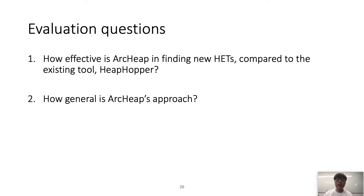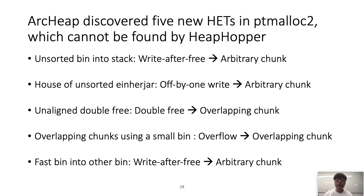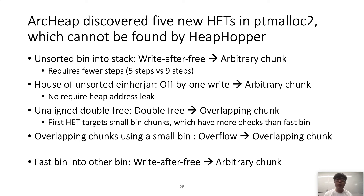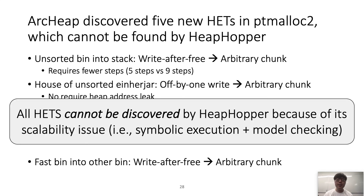Our evaluation addresses two questions: how effective is Rkip compared to the existing tool HeapHopper, and how general is Rkip's approach? Rkip discovers five new heap exploitation techniques in ptmalloc2 that cannot be discovered by HeapHopper. The first technique is called Unsorted Bin Attack, requiring fewer steps than the existing approach. Another technique, House of Unsorted INR, converts an off-by-one null-byte overflow into an arbitrary chunk without a heap address leak. Unaligned double free is the first technique that uses double free in the small bin, which has more checks than the fast bin. These techniques cannot be discovered by HeapHopper due to scalability issues from its underlying symbolic execution and model checking.